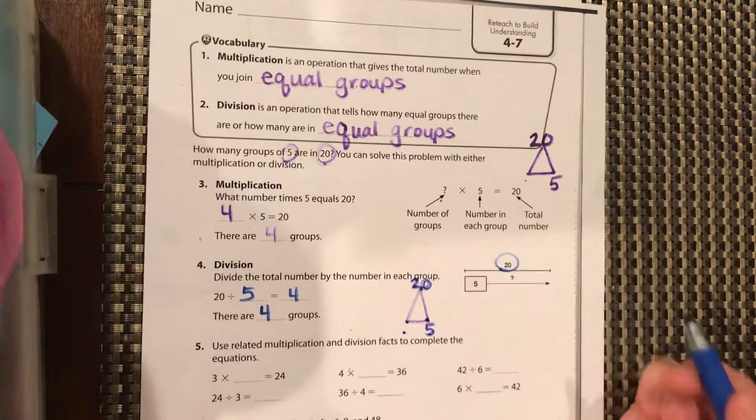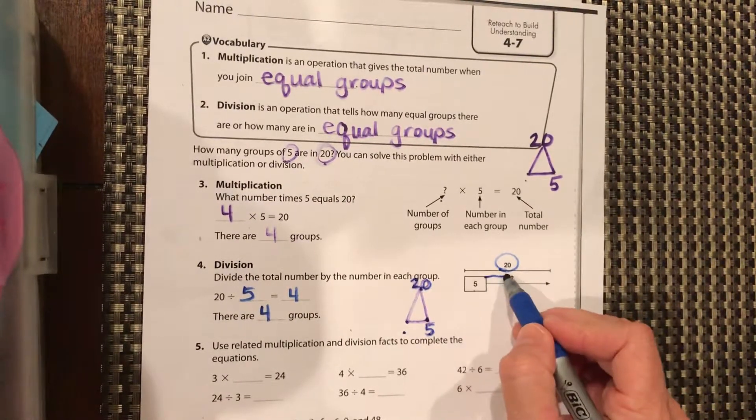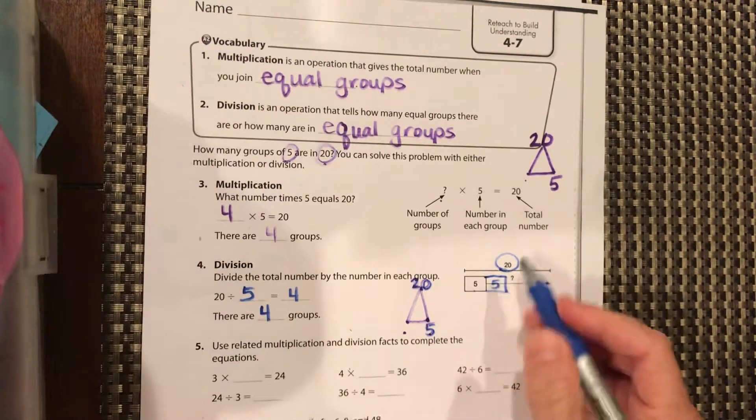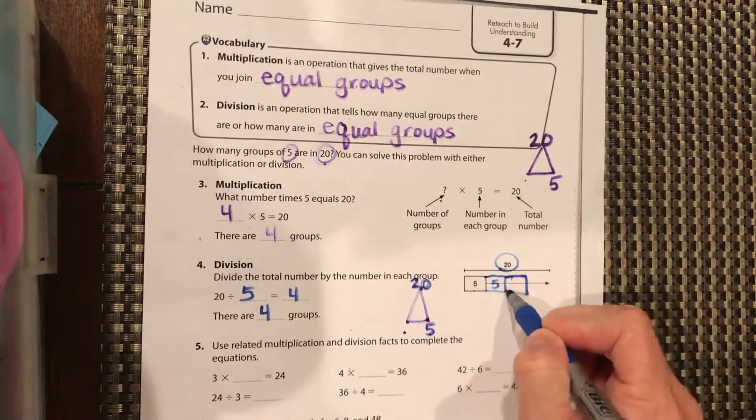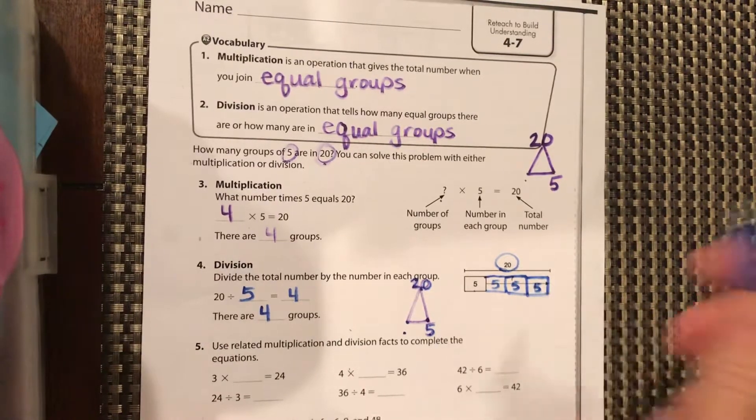Here's our bar diagram. 20 goes on the top. There's five in each group. So we would have five, another five there, that's 10, another five there, that's 15, and another five there, that's 20.